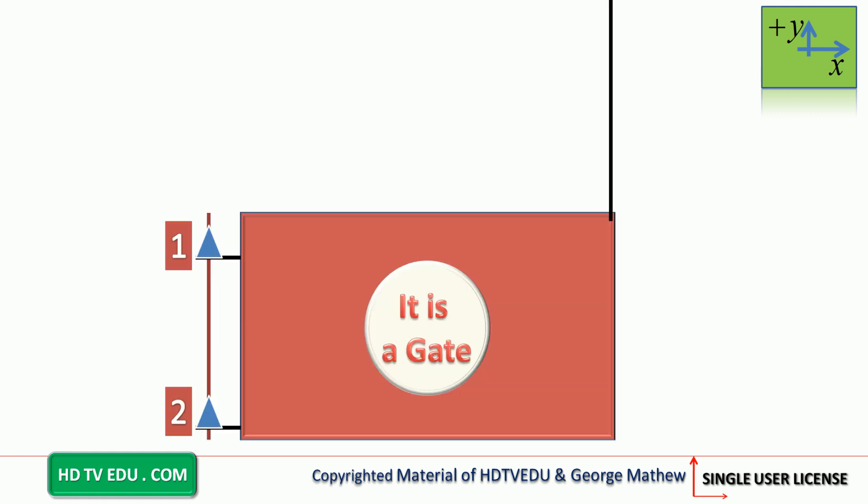We are told that the tension force is vertically up. Even if you are not told, we know it should be vertically up. Why? Tension is a pulling force. If you tie a rope at this point, the rope does not push on the object — it actually pulls on it. So the direction of pull is vertically up, meaning tension has to be vertically up.